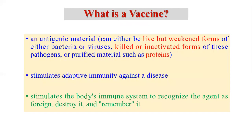So what is a vaccine? A vaccine is an antigenic material. It can be either a live but weakened form of a bacterium or virus, or a killed or inactivated form of these pathogens, or some purified material — mostly proteins or glycoproteins. It stimulates adaptive immunity against the disease, protects the body from a particular type of disease, and stimulates the body's immune system to recognize the agent as a foreign particle, destroy it, and memorize the incident for future encounters.